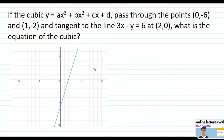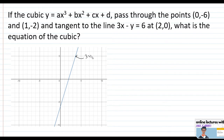For the last problem, we have a cubic y equals ax cubed plus bx squared plus cx plus d that passes through points (0, negative 6) and (1, negative 2), and is tangent to the line 3x minus y equals 6 at (2, 0). We need to find the values of a, b, c, and d.